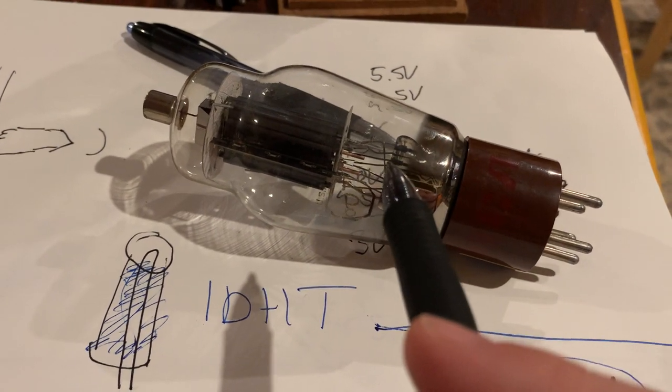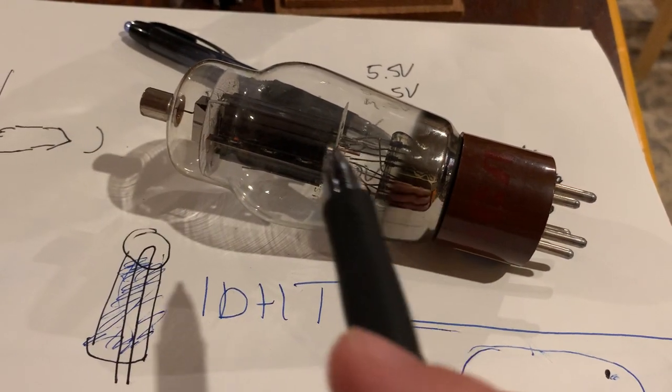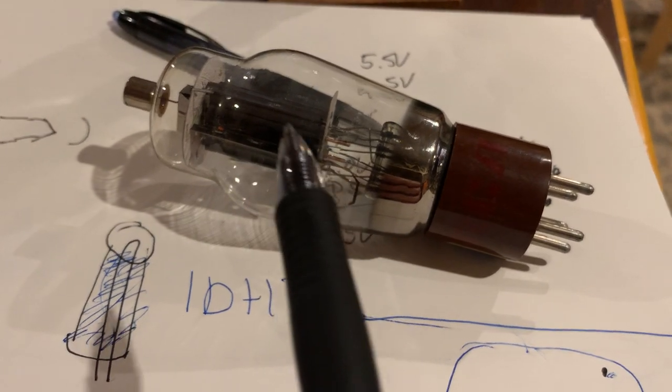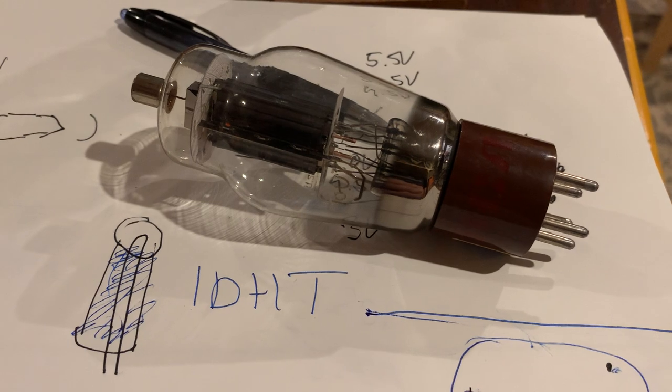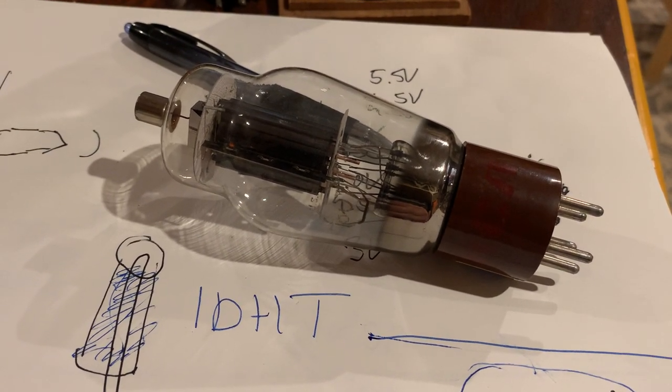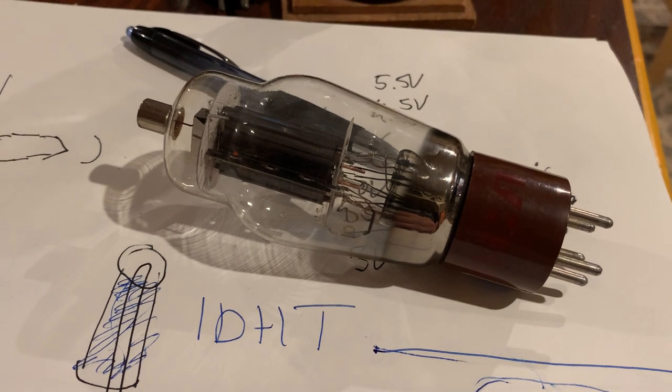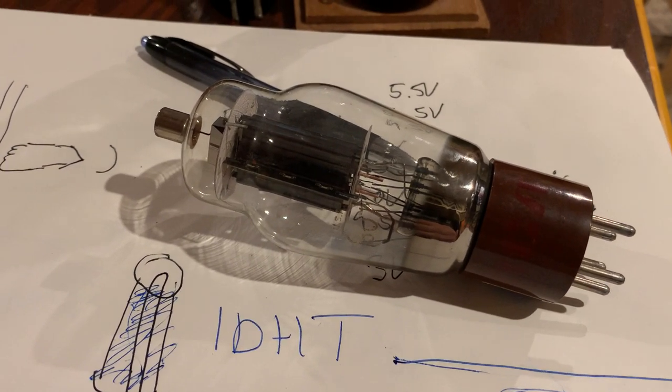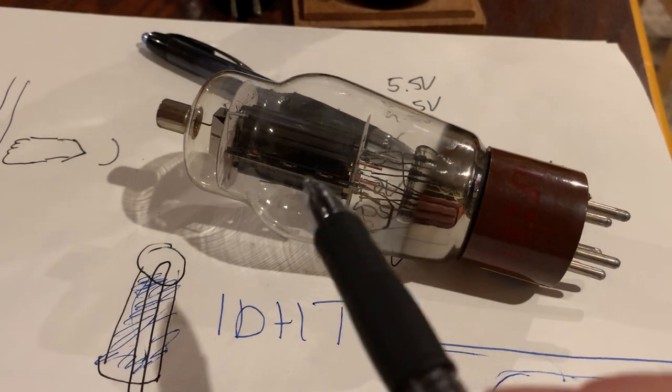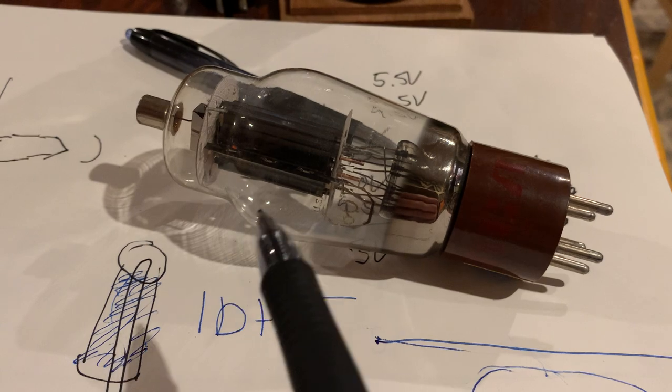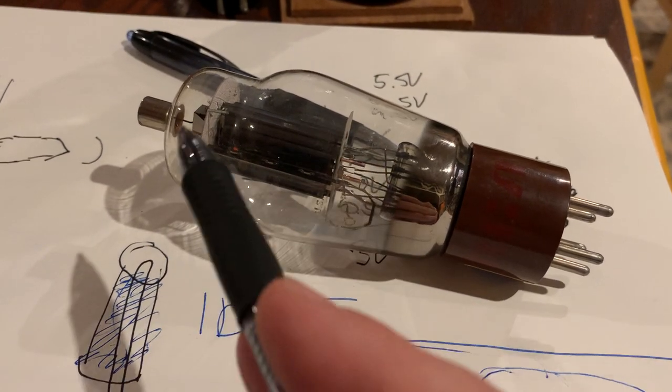But your cathode continuously has to emit electrons to the plate, and you are depleting the cathode. So you are killing your tube. So what can you do? So what you need to do is find out a method of how to keep the filament continuously on, and when you switch your amp on and off, just switch the high voltage.